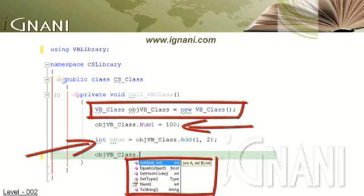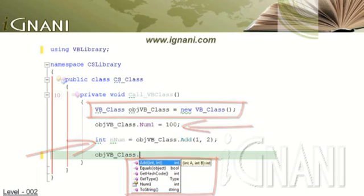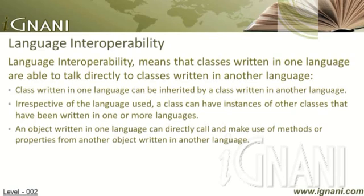Visual Studio IntelliSense is also capable of understanding a class that was written in a different language than the one in which the code is being written. This code demonstrates that irrespective of the language used, a class can have instances of other classes written in one or more languages, and an object written in one language can directly call and make use of methods or properties from another object written in another language.